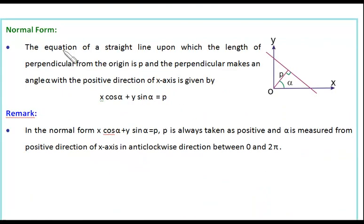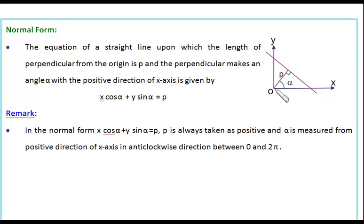Next is the normal form of line. The equation of a straight line upon which the length of perpendicular from the origin is p, and the perpendicular makes an angle alpha with the positive direction of the x-axis, is given as follows. This is the line whose equation we have to find out, and the length of the perpendicular from the origin is p. This perpendicular makes an angle alpha with the positive direction of x-axis. Let's find out how we derive it.